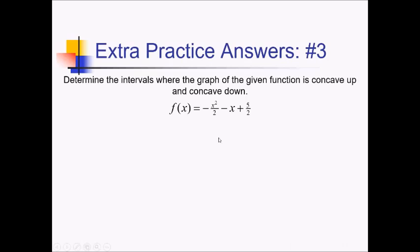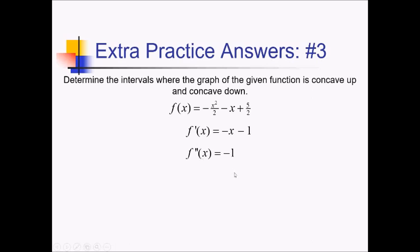To figure out concavity for this function, I'm going to start by taking two derivatives. Using the power rule, the first derivative is negative 1 half times 2, that's negative x, and then the derivative of negative x is negative 1. This fraction gets zeroed out completely. The second derivative is just going to be negative 1. Since f double prime is a constant value of negative 1, that means f double prime is negative for all values of x, which means we don't have concave up anywhere, and we've got concave down everywhere from negative infinity to positive infinity.